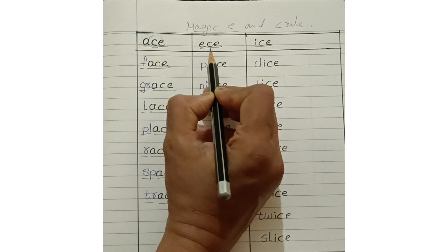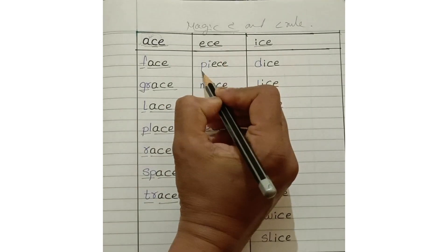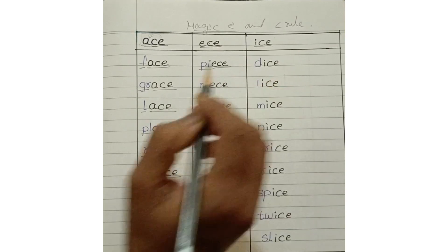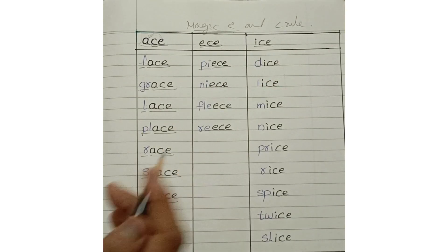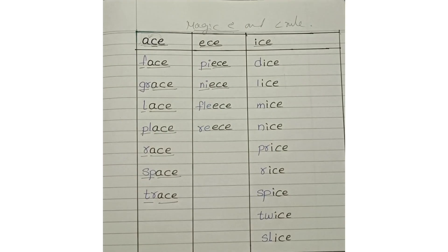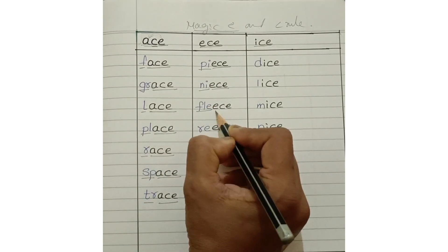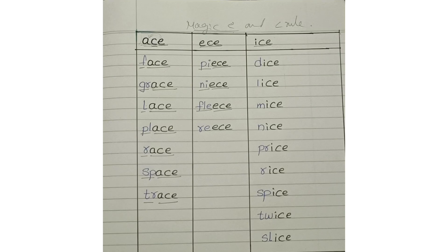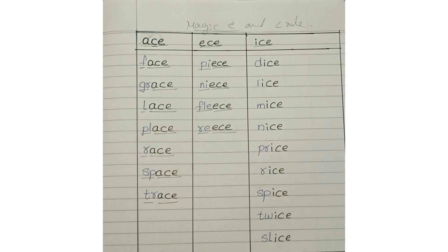ECE makes the sound 'eece'. P + ECE: peace. Kn + ECE: knees. Fl + ECE: flees. R + ECE: rees.